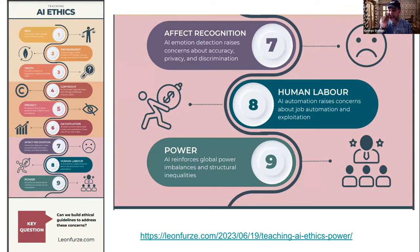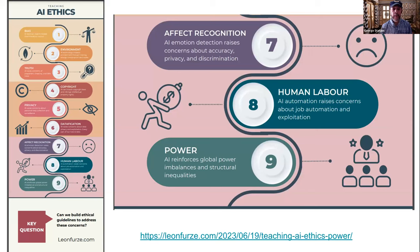Copyright — there's been quite a bit of discussion about that as far as music, where AI has been creating songs by taking two artists and combining them. Privacy, we've been talking about that. Datification. And the last three: affect recognition, accuracy/privacy/discrimination, human labor, and then finally power. He actually includes an article specifically about each one of these — if you later want to take some time, he includes lesson plans and that kind of thing. He also has a blog, as Ken notes in the chat.